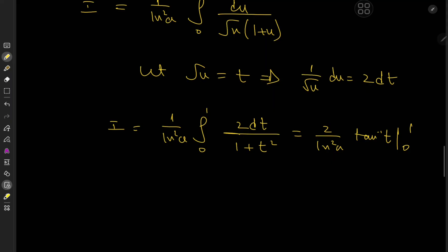As t tends to 0, arctangent tends to 0. And as t tends to 1, arctangent tends to pi over 4. So I here, the target integral sorts out to pi over 4 times 2 is pi over 2 times log squared a, which is absolutely gorgeous.